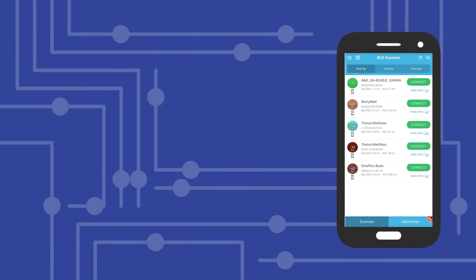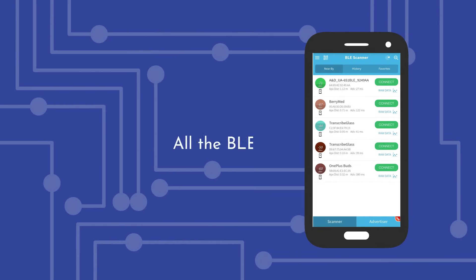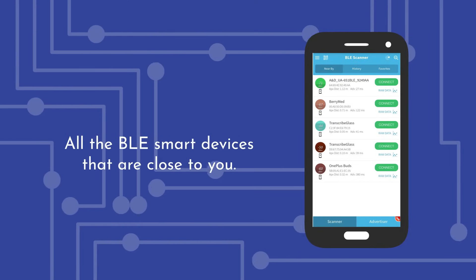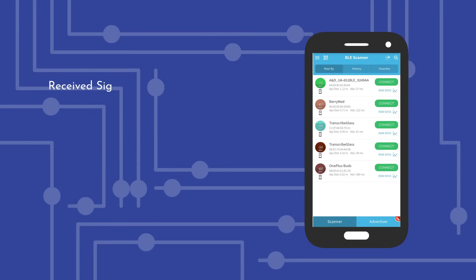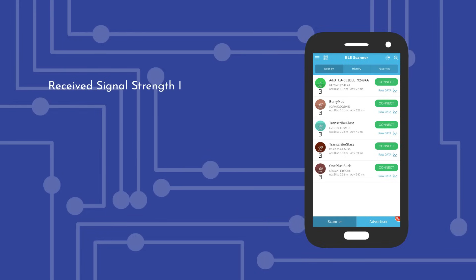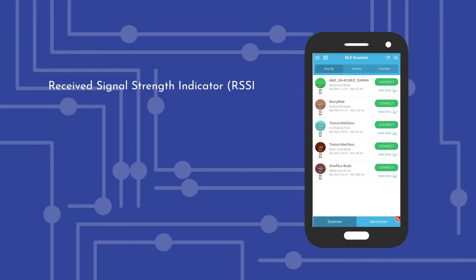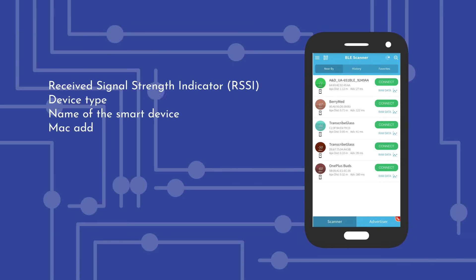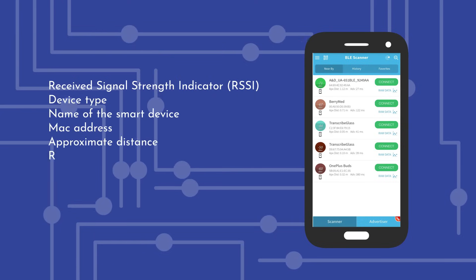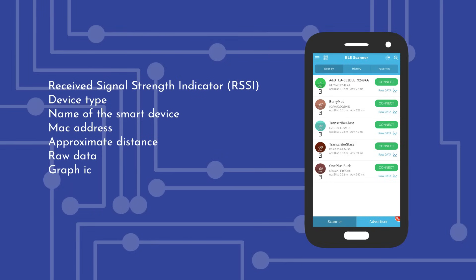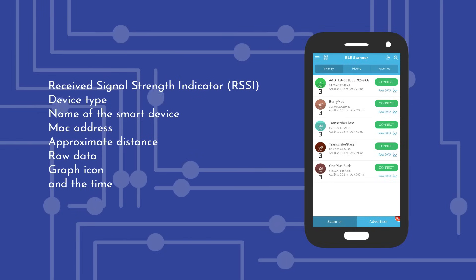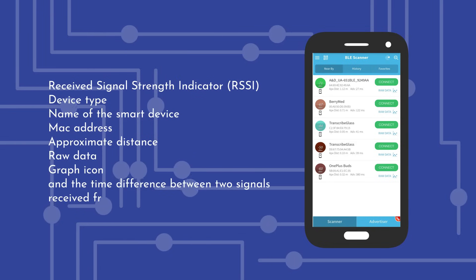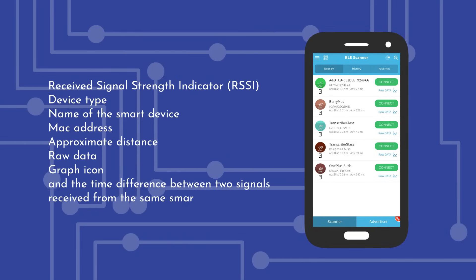By default, the Nearby section will appear with a list of all the BLE smart devices that are close to you. This includes their received signal strength indicator (RSSI), device type, name of the smart device, MAC address, approximate distance, raw data, graph icon, and the time difference between two signals received from the same smart device.